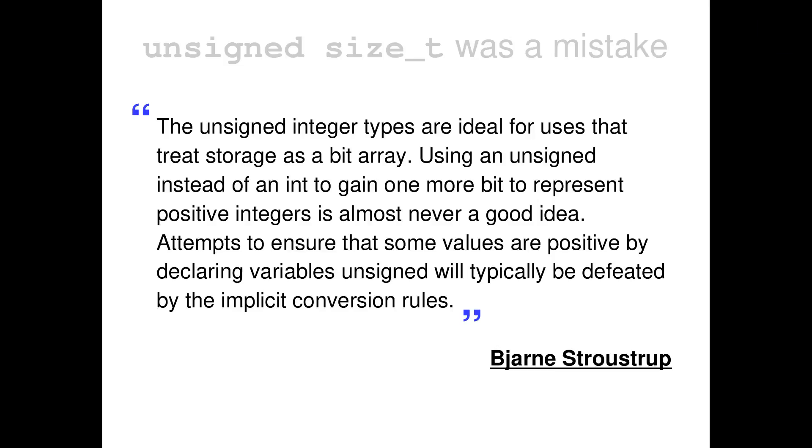Here I'm reading a quote from the C++ Programming Language, from the book from the actual inventor of C++, Bjarne Stroustrup. And it goes like this: The unsigned integral types are ideal for uses that treat storage as a bit array. Using an unsigned instead of an int to gain one more bit to represent positive integers is almost never a good idea. Attempts to ensure that some values are positive by declaring variables unsigned will typically be defeated by an implicit conversion rules. So this is basically screaming that if you want the use case B, the unsigned is just the way to go. And the other cases are dangerous.